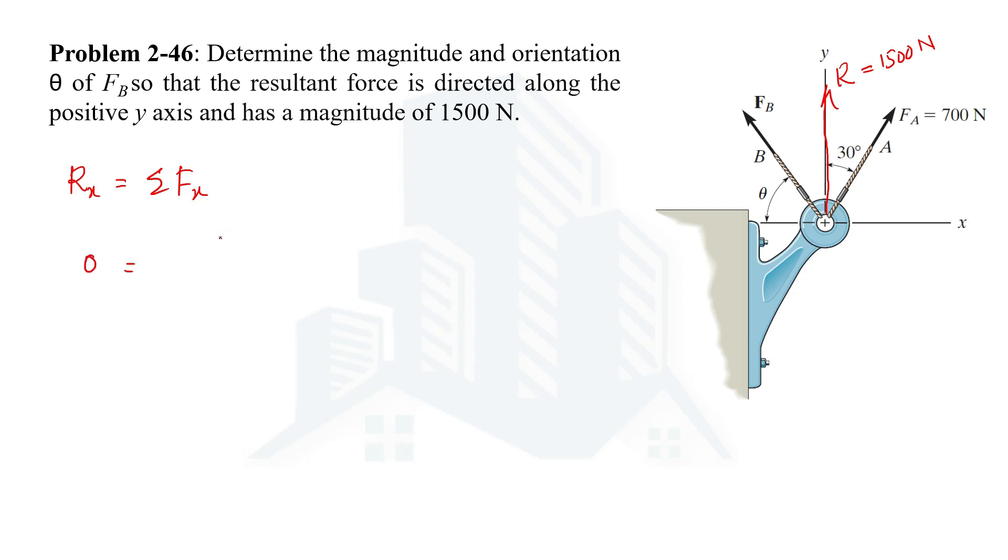X component of Fa would be directed along the positive x-axis, that will be 700 sin 30 or cos 60. The x component of Fb would be directed negative because the direction will be along the negative x-axis: Fb cos theta. This will be equation number one.